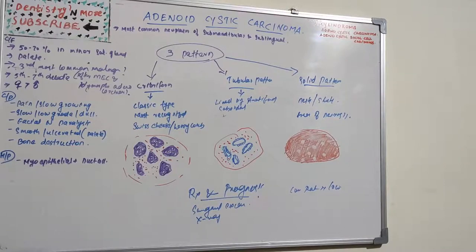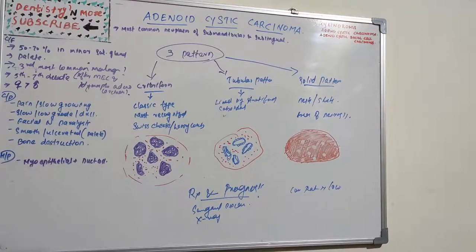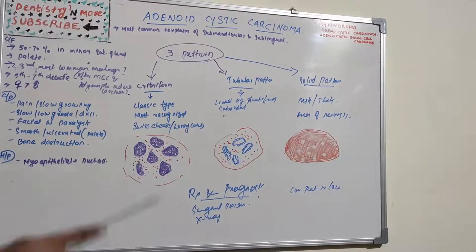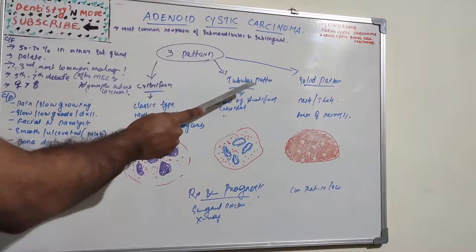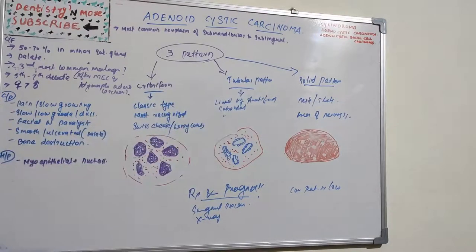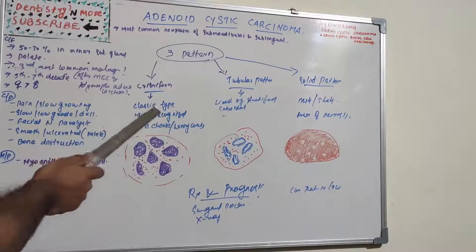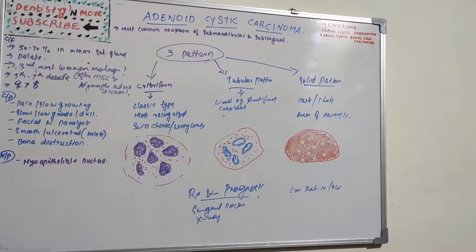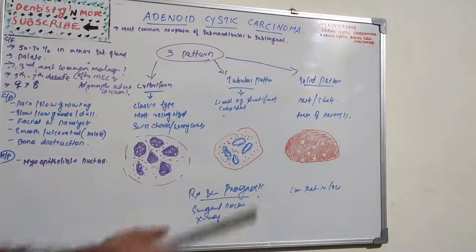Moving on to histopathologic features, adenoid cystic carcinoma is composed of a mixture of myoepithelial cells and duct-like cells that can have varied arrangements. There are three basic histologic patterns: the cribriform type, the tubular type, and the solid type.